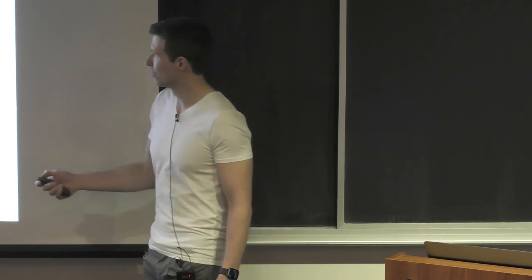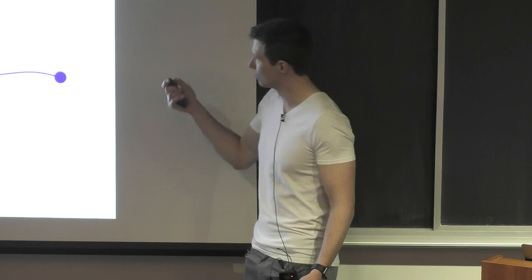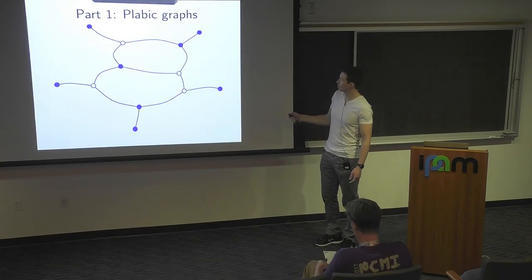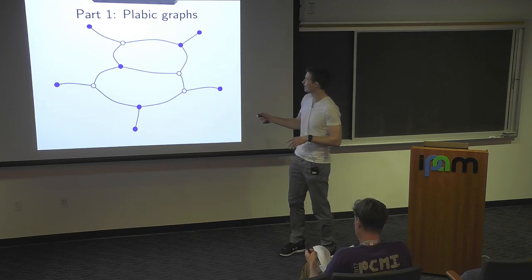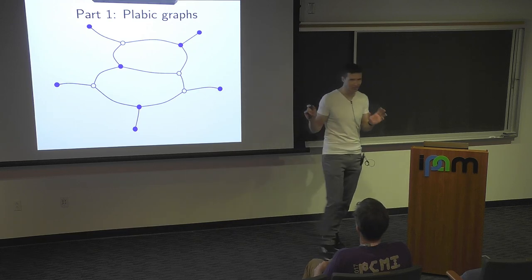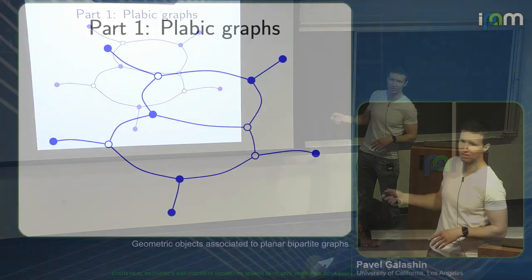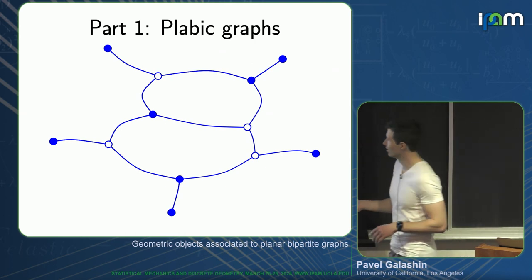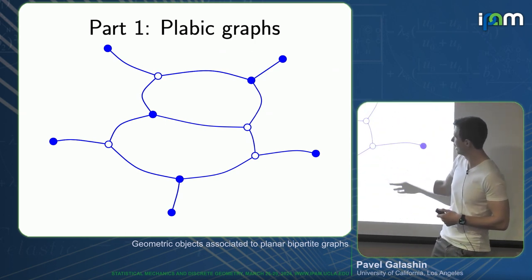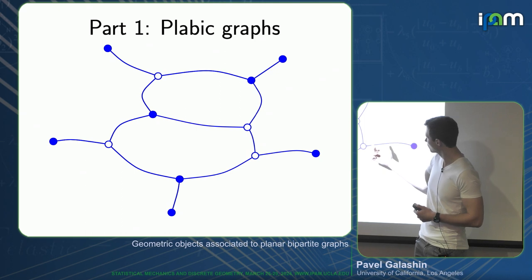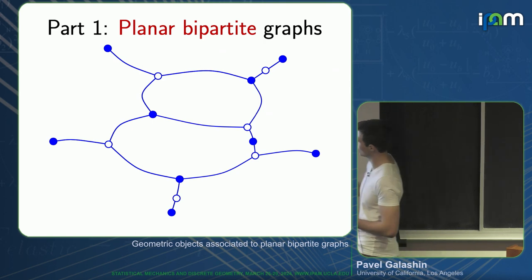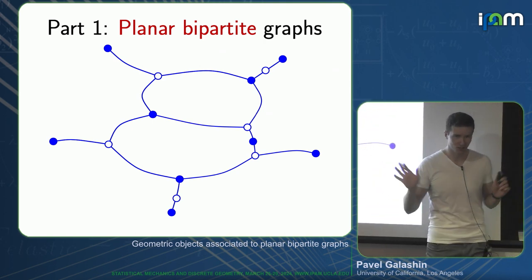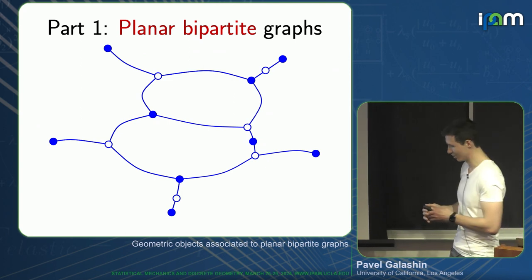I'm going to start with some background on how I like to think about planar bipartite graphs. I'm going to say 'plebik,' which means planar bicolored. The difference is that every vertex is white or black, but it doesn't have to be bipartite. If you care about bipartite, you can always insert a little vertex in the middle of every such edge, so then it becomes bipartite in the usual sense of the word.